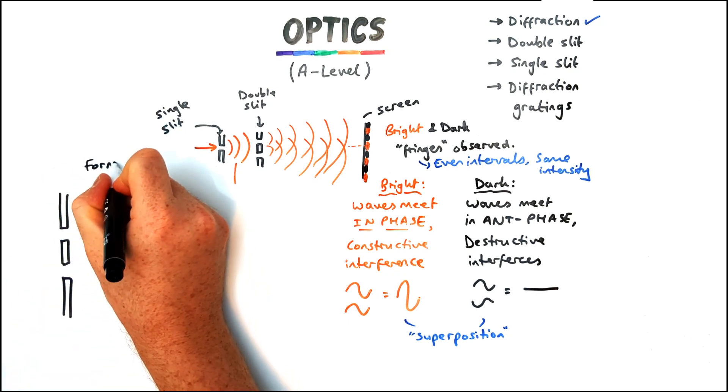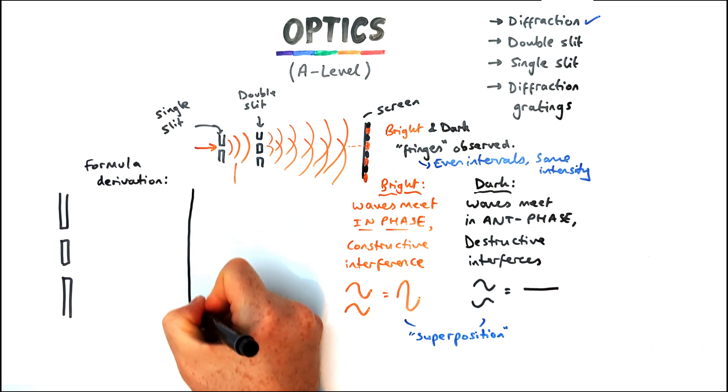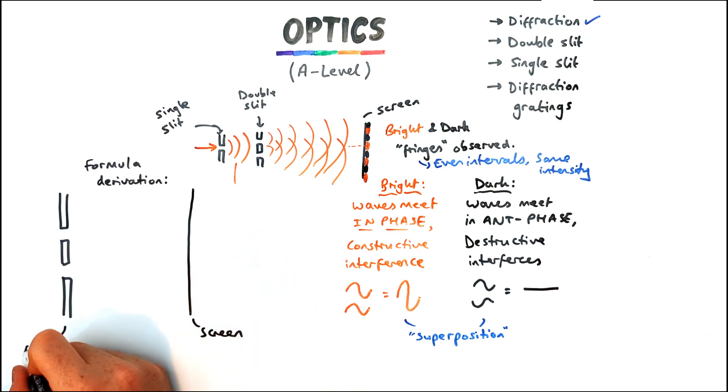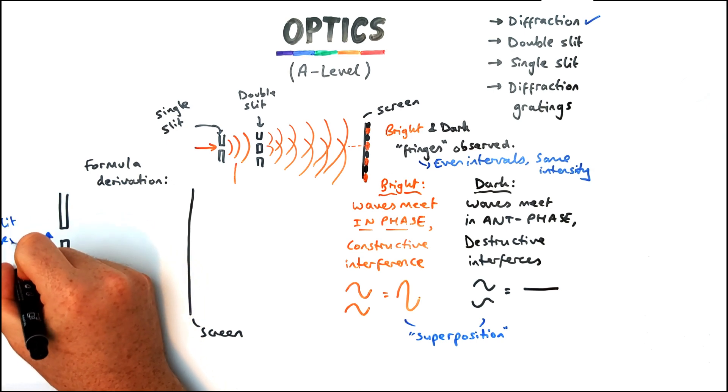So let's have a closer more detailed look at the setup and see if we can derive an equation to help explain how the fringe spacing varies, what affects it. So we've got two slits we're going to call a slit separation S and we've got the double slit to the screen.